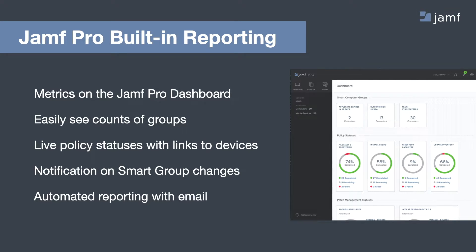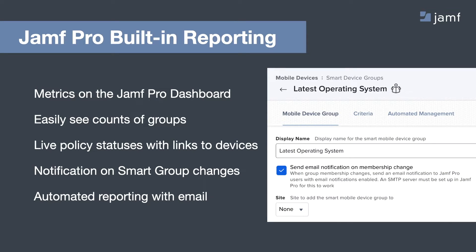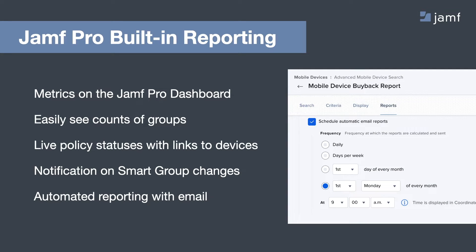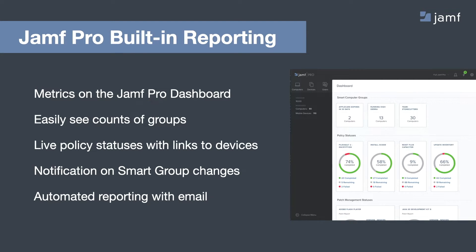Two other related features worth knowing about are notification on smart group change and automated reporting. Not only can Jamf Pro sort devices into groups automatically based on their inventory with smart groups, it can proactively email an IT administrator to make them aware of any changes — whether that's smart status of a hard drive or FileVault encryption status. Automated reporting can help check that box for a department that just wants their trusty old monthly report in a CSV. Jamf Pro can automatically send emails containing specific reports, keeping the number of admins in Jamf Pro to a minimum, but making sure everyone can benefit from the data within the system.